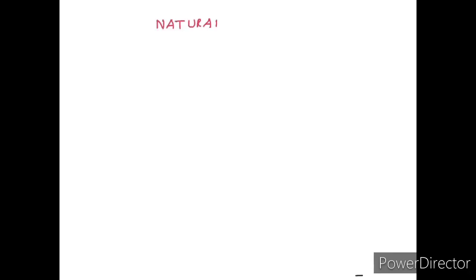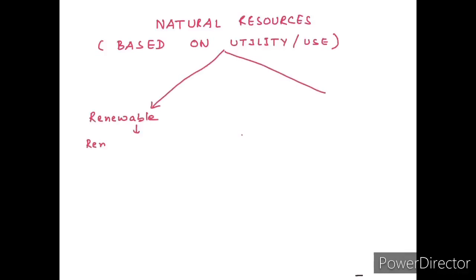Next we have natural resources classified on the basis of utility or use. First is renewable resources. Renewable resources are resources which over a period of time replenish themselves. They are unlimited in quantity and not really affected by human activity.